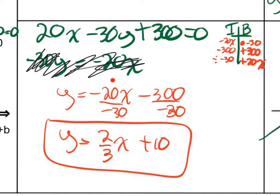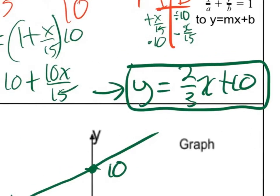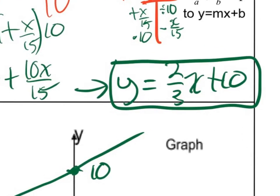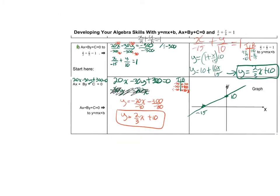Negative 20 divided by negative 30. A negative over a negative is a positive. And then that reduces to 2 thirds. And then negative 300 divided by negative 30 is positive 10. Now, if I've done this right, I've gotten y equals mx plus b in two totally different ways. I, hopefully, I would get the right answer. So in this form, I got 2 thirds x plus 10. And down here, I also got 2 thirds x plus 10.